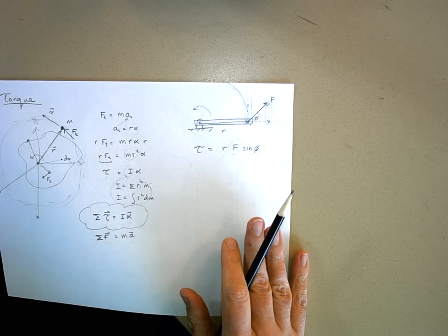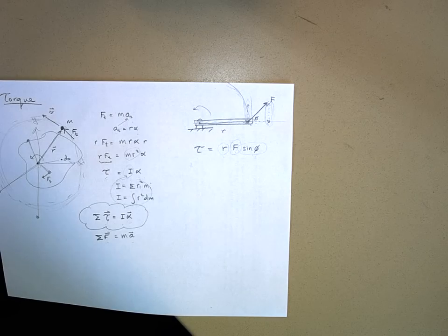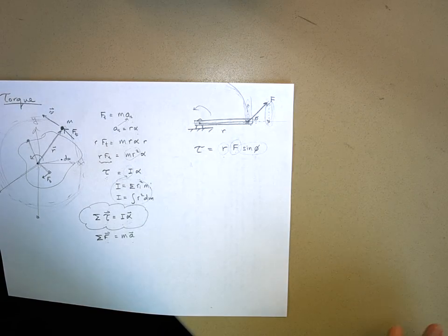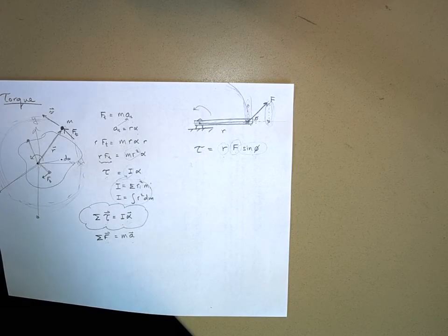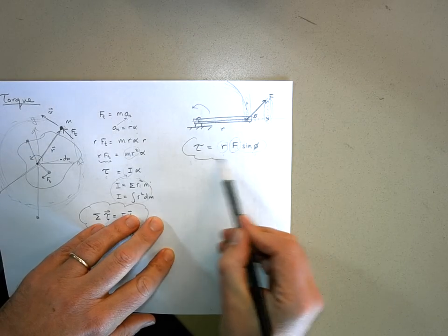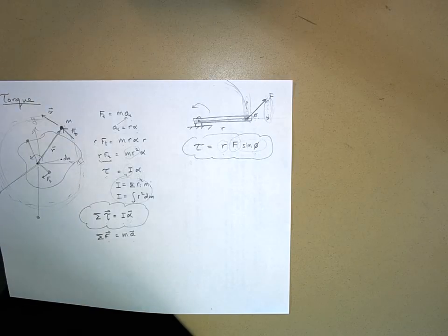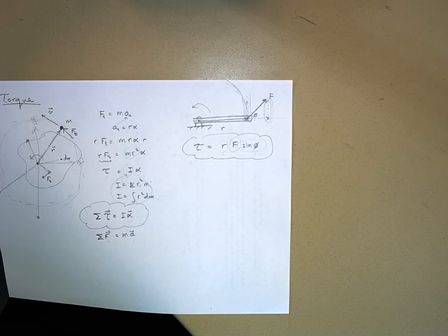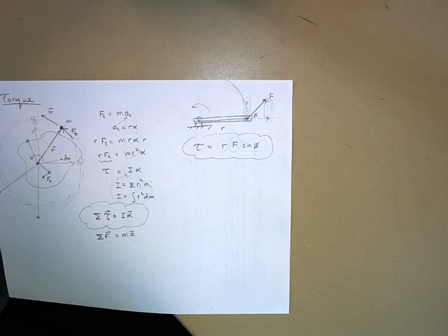I've run out of time. There is an example to go through where you have two different forces applying a torque to an object — you just add those torques together to find the net torque, then apply net torque equals I times alpha. Okay, that's it.